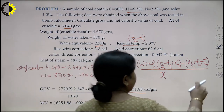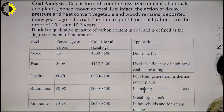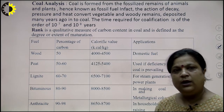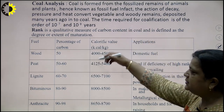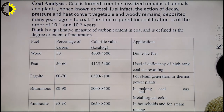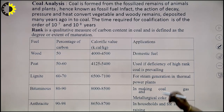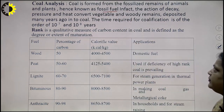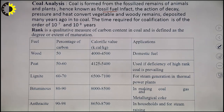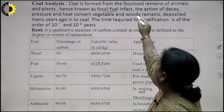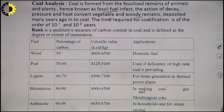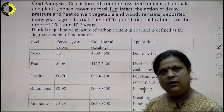Next is coal analysis. Coal is formed from the fossilized remains of organic matter, possibly plants, which is why they are known as fossil fuels or buried fuels. The action of decay, pressure, and heat converted vegetable and woody remains deposited many years ago into coal. The time required for coalification is about 10^7 to 10^8 years. The rank of coal is the qualitative measure based on carbon content, and carbon content is directly proportional to calorific value. Rank is defined as the degree of maturation.